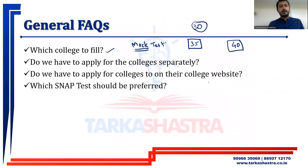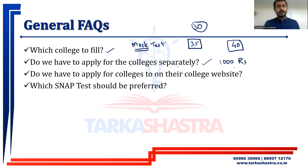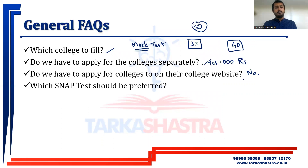Do we have to apply for colleges separately? Yes, you have to apply for each college separately and pay 1,000 rupees per college. However, you do not have to apply on each college's individual website. The application is available within the SNAP form itself. Once the SNAP test is done, college applications open, and you can then select and apply to three to four colleges directly through the SNAP portal.